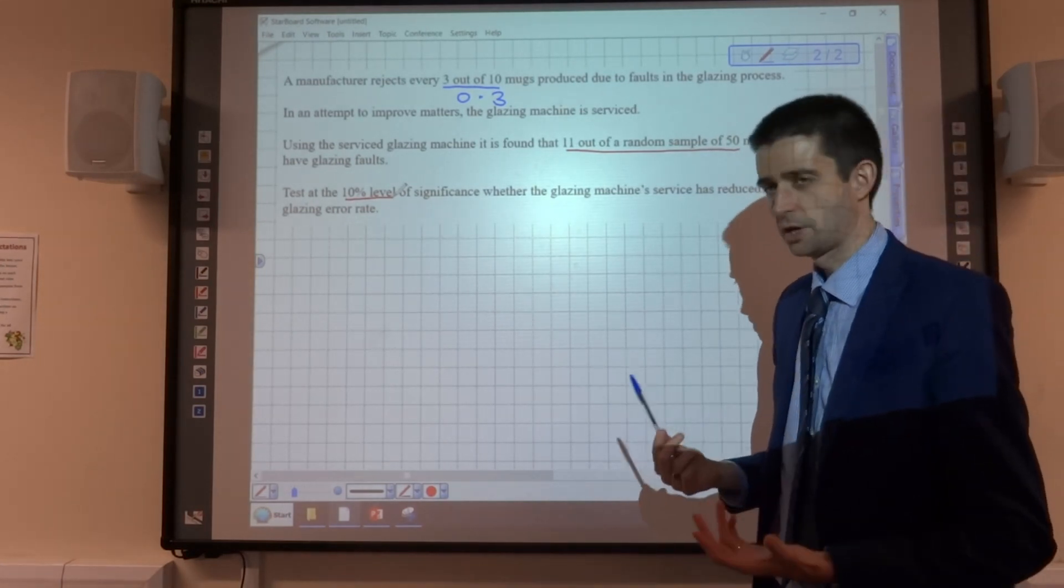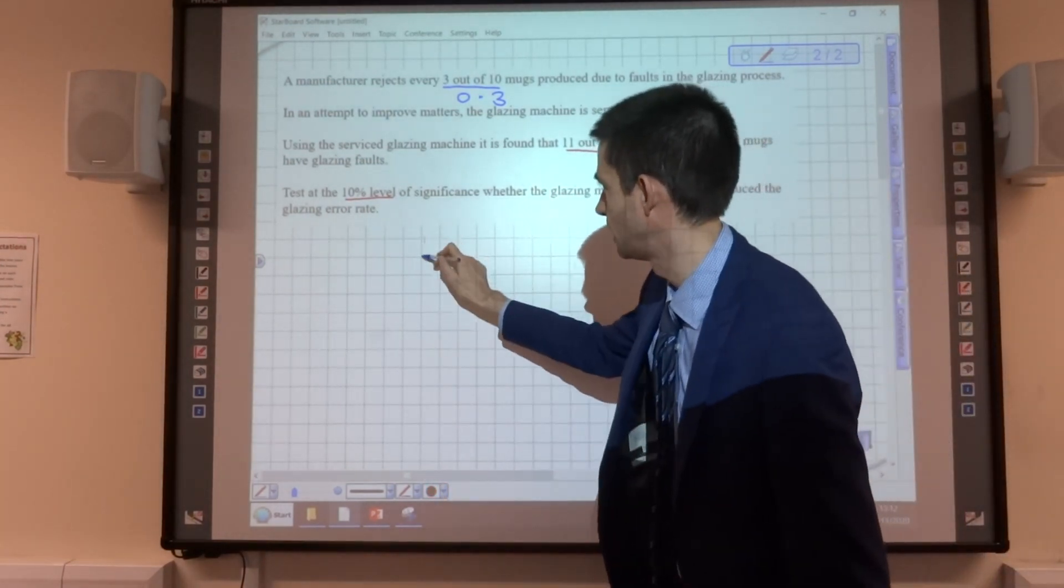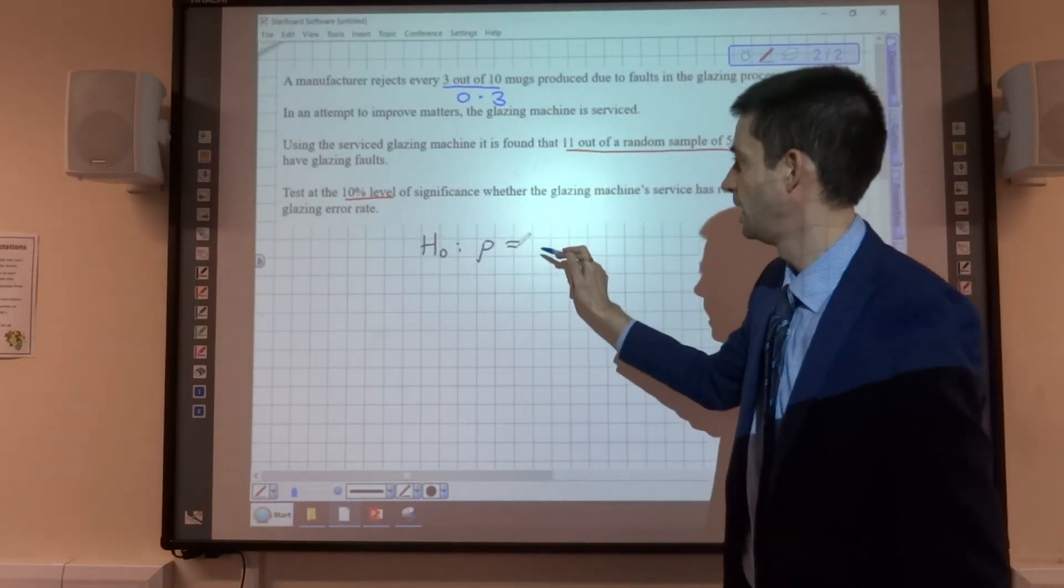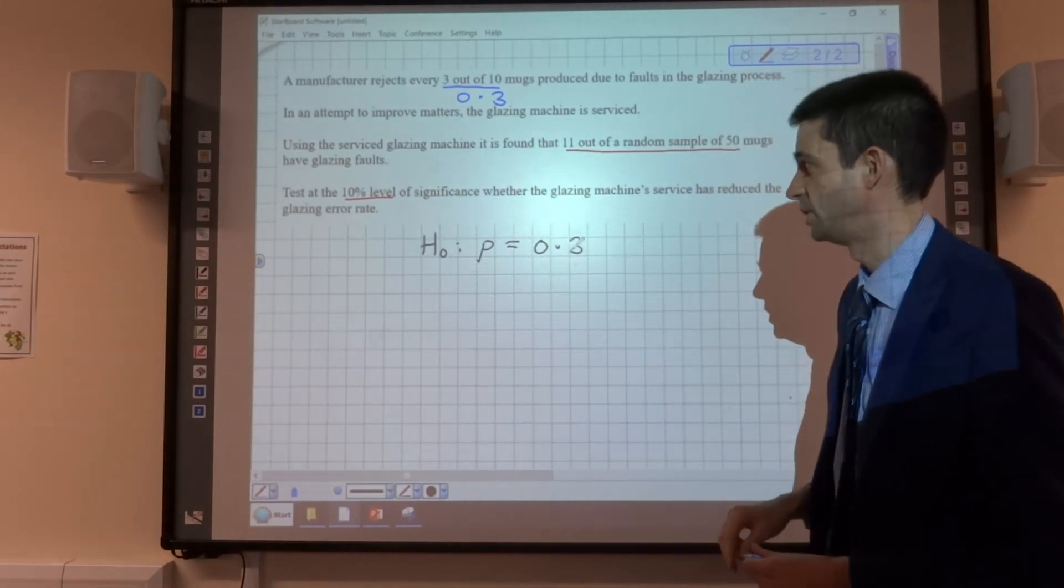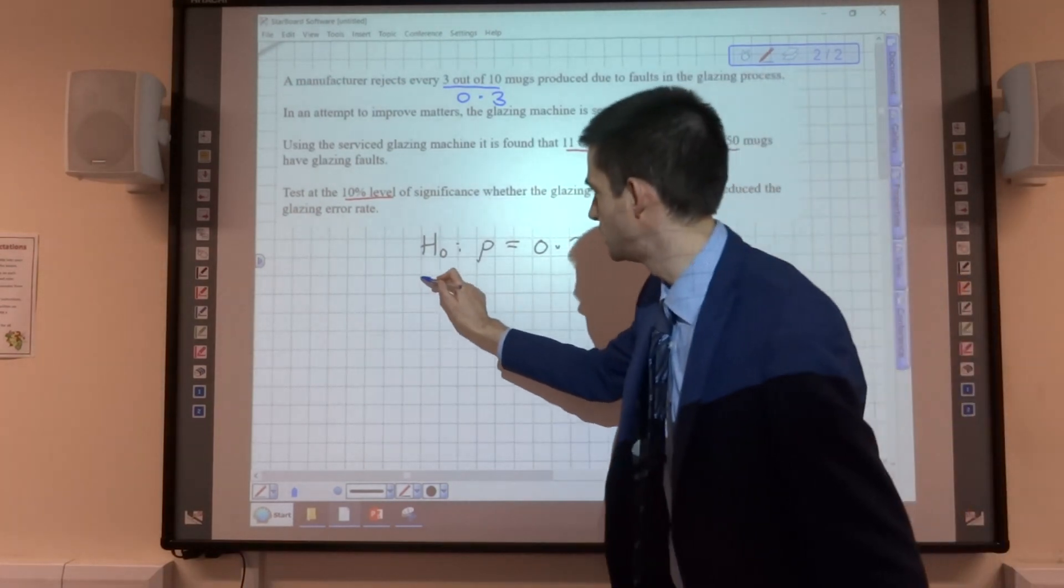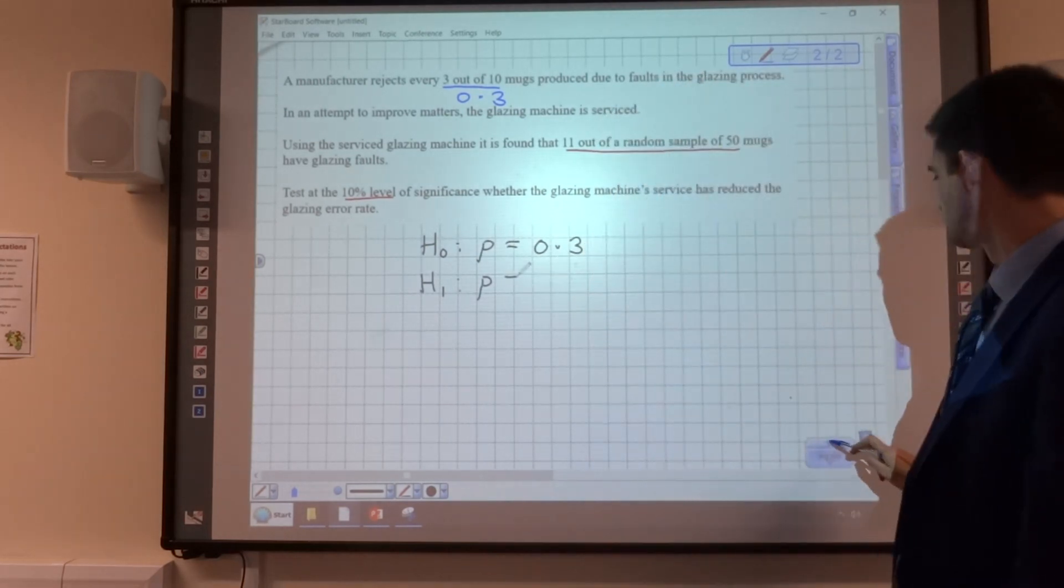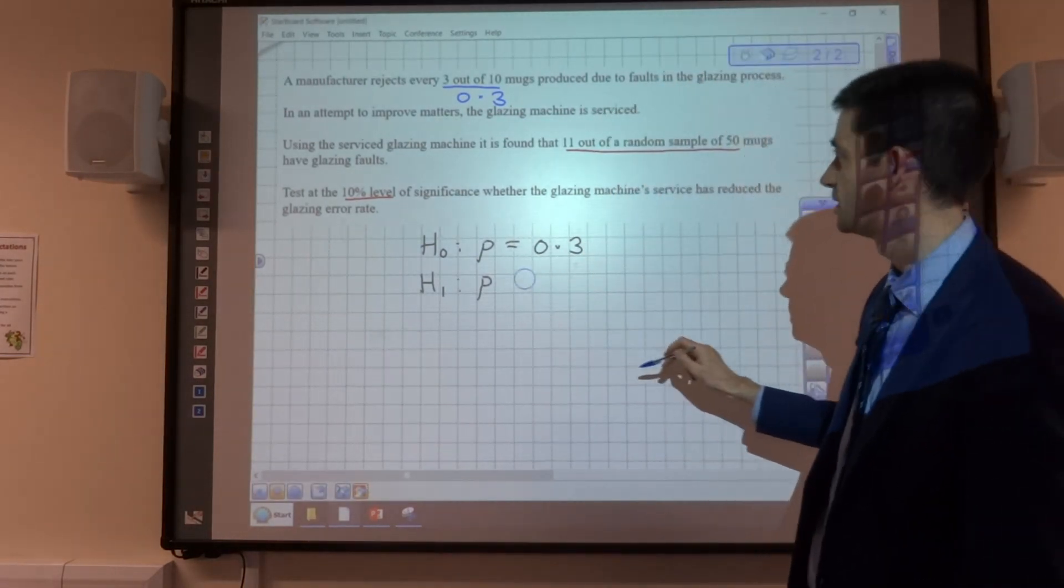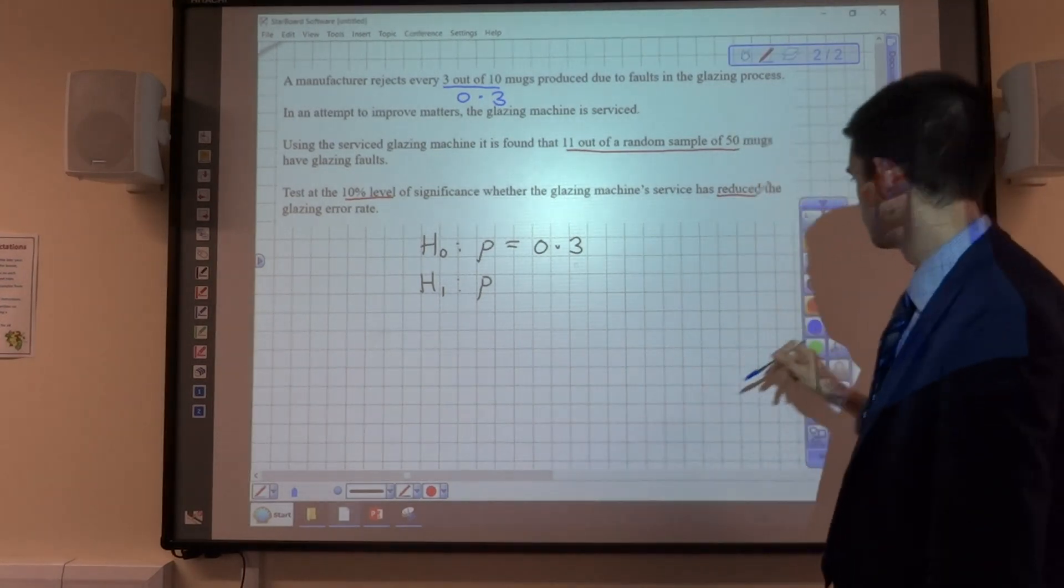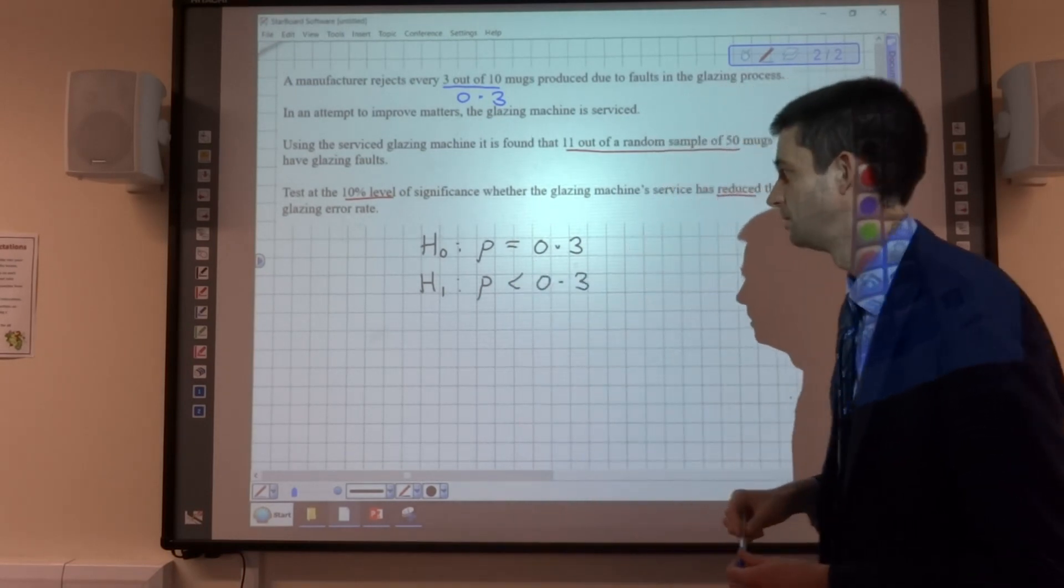We're testing at the 10% level of significance whether this implies that the service has reduced the glazing error rate. So, we need a null hypothesis. Our null hypothesis, H₀, is that the probability of the population is the stated probability of 0.3. So 3 out of 10 implies 0.3. We then need an alternative hypothesis. The alternative hypothesis, in this case, is going to be that we have reduced the number of errors, and therefore the probability is less than 0.3.